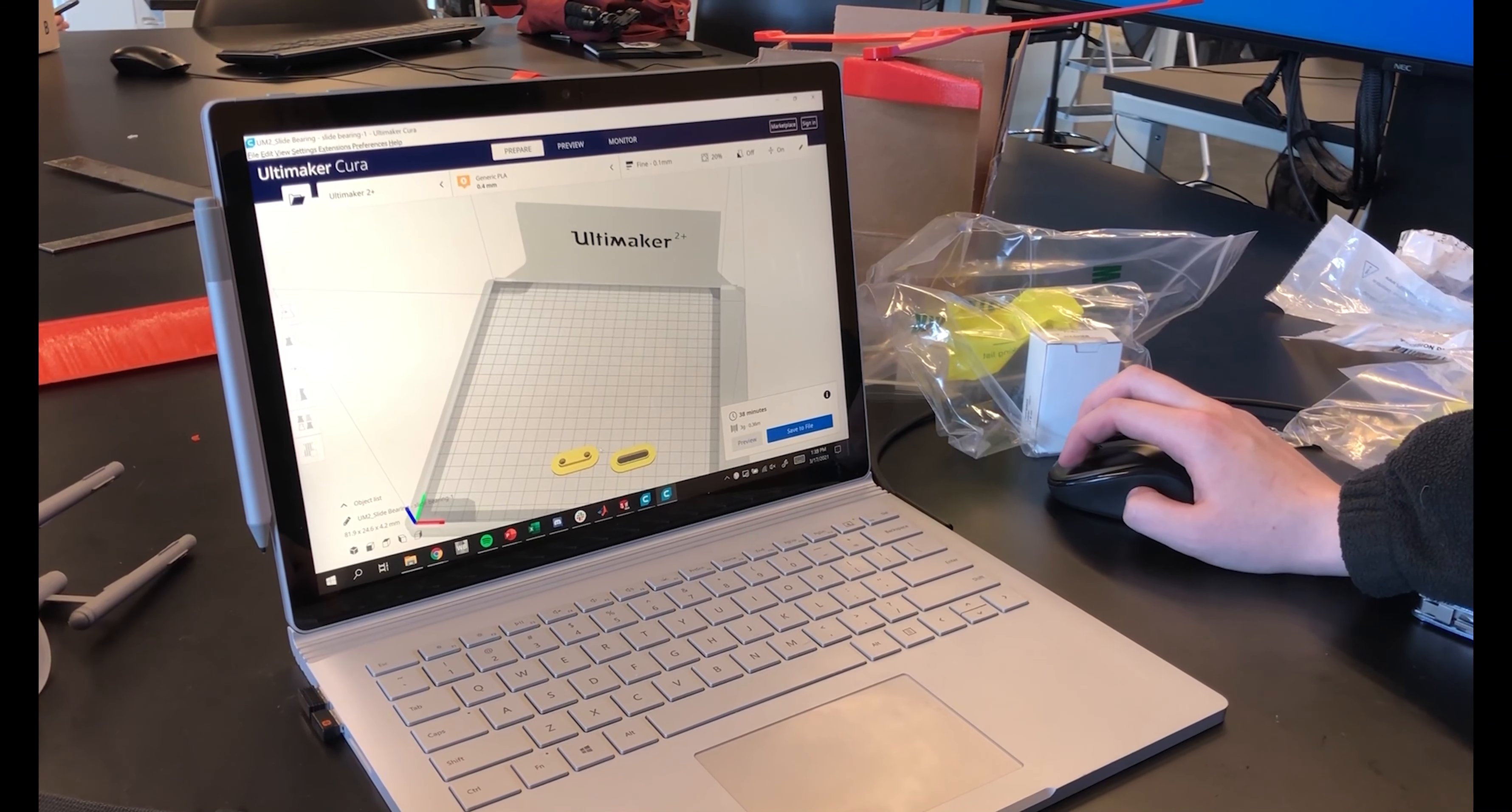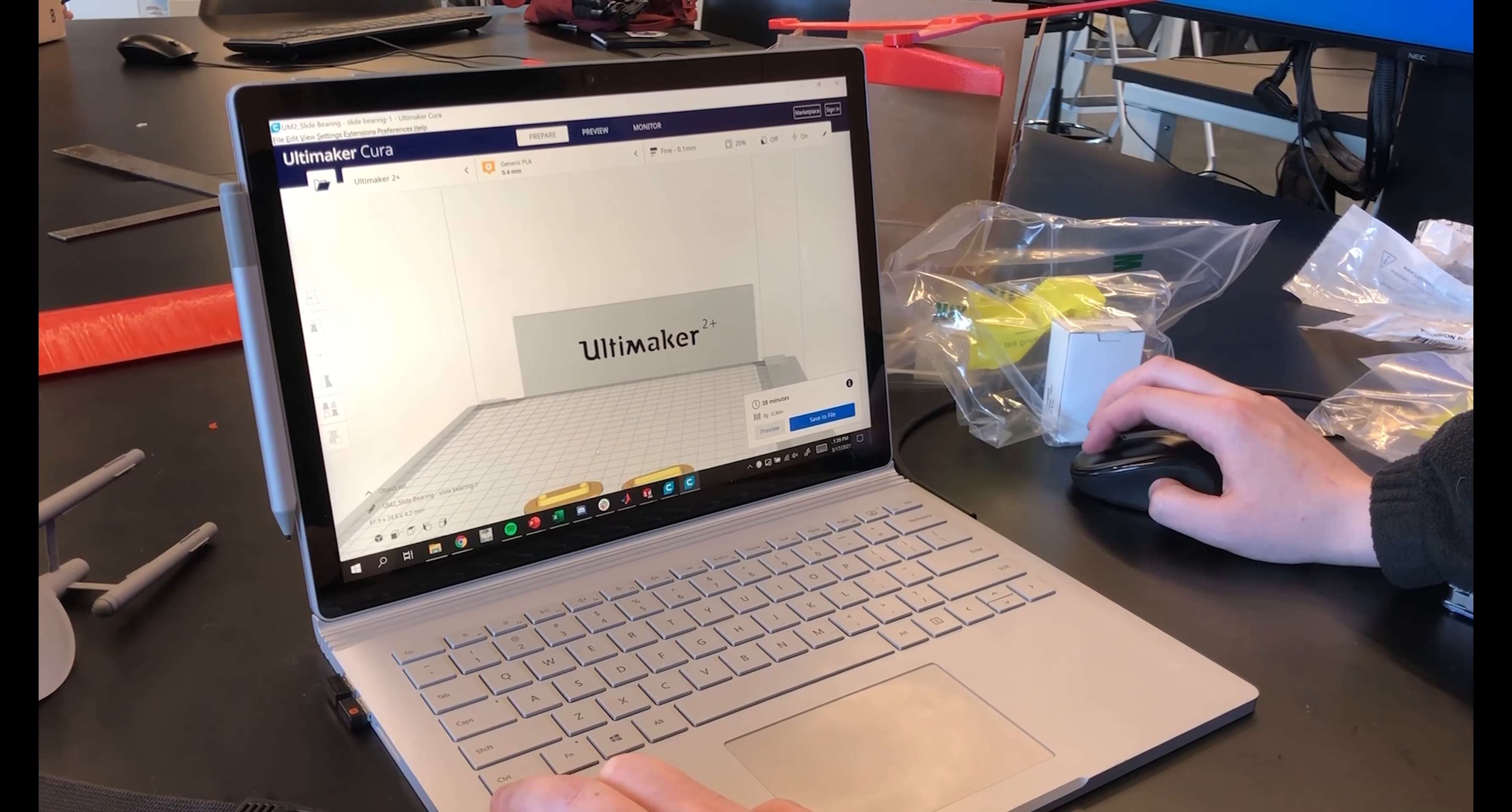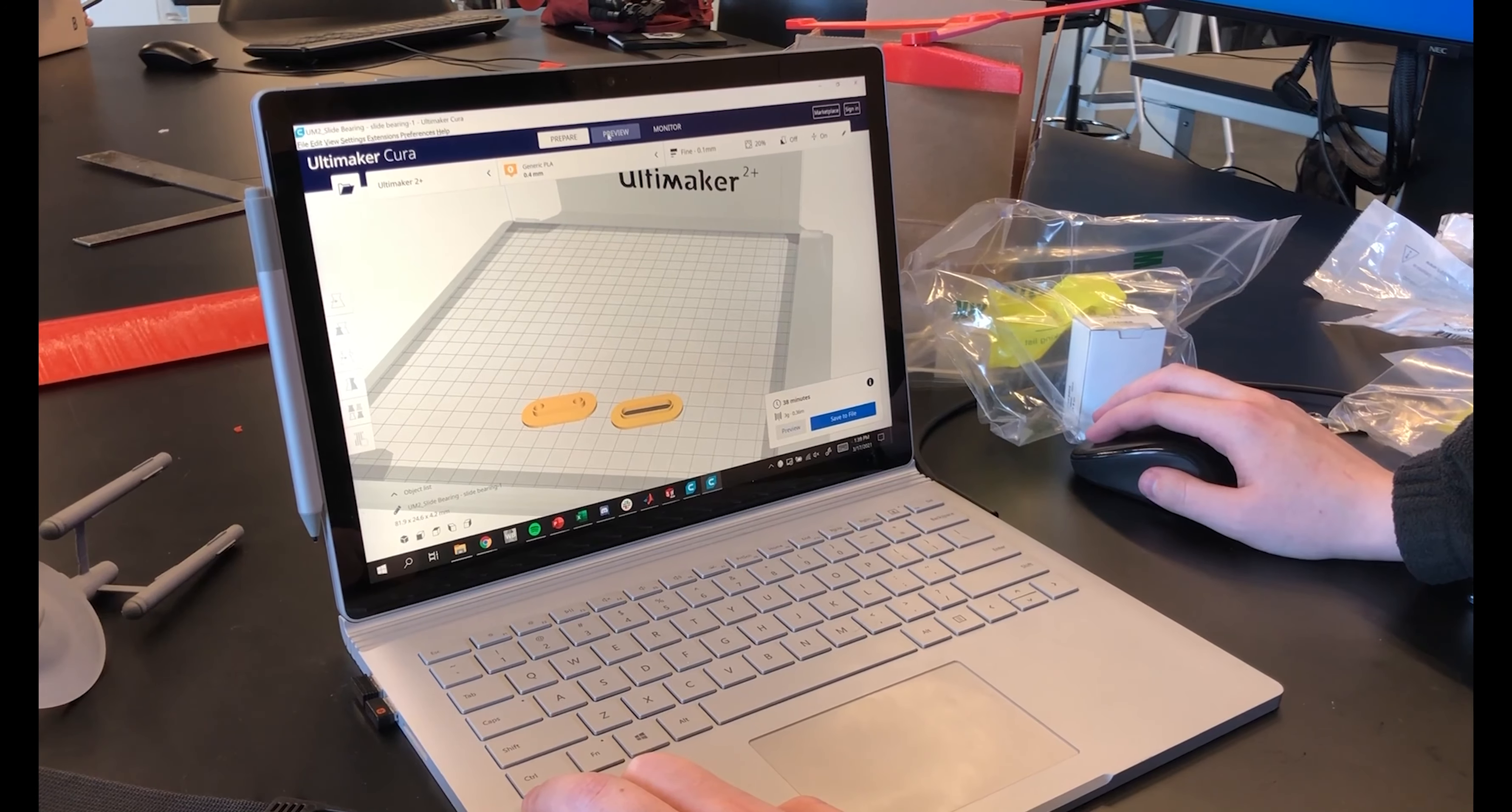This program is called Cura, so it goes through and it slices the model into little layers and tells the 3D printer which path it should go along to.